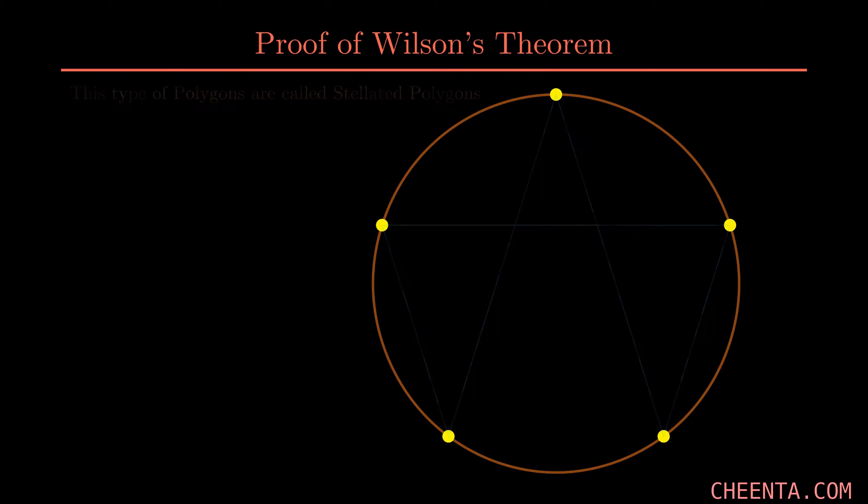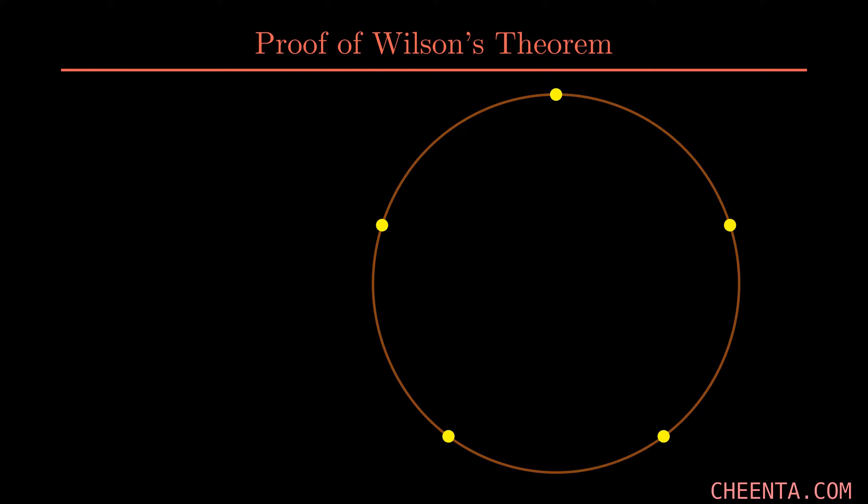Now to count how many polygons are there, there is a trick. First we have to choose one dot from these p dots. Let's suppose we choose this one. How many ways can we do this? Well, there are p dots, that is five, so we have the choice of p. So we can write choice equals p. Now there are p-1 dots, so we have to choose one of them, so there is p-1 choice. Suppose we choose that one, for our case 4. So p-1, and doing this again and again, we will get p factorial.